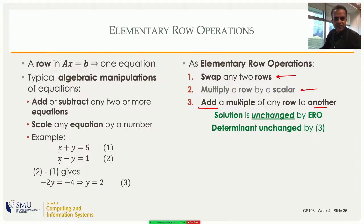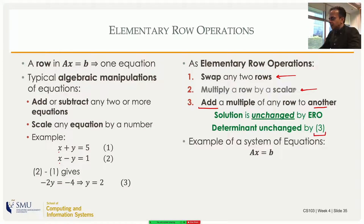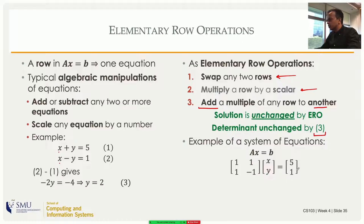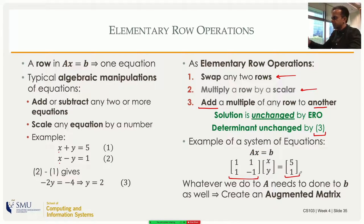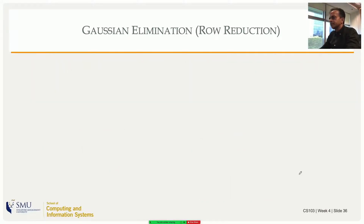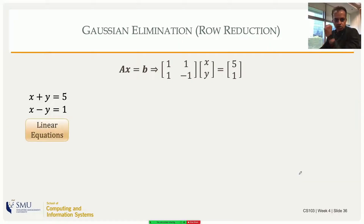Let's cast our equations into matrix form. The equation x + y = 5 gives 1·x + 1·y = 5, and x − y = 1 gives 1·x − 1·y = 1. Those are the two equations in matrix form. Whatever operation I do on the left-hand side I must also do on the constants. For that reason we create the augmented matrix — we put 5 and 1 alongside A and call it a different matrix.